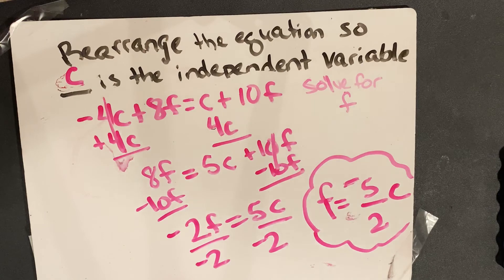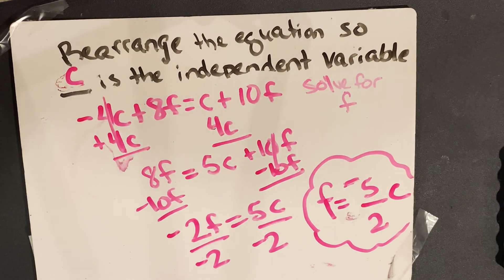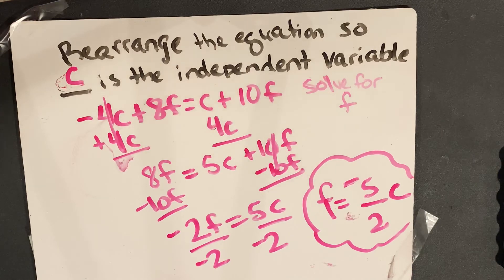If you want to rewrite it so that it makes more sense to you, then all you do is switch sides. So we had to rearrange it to get a as our independent variable. Now a is the independent variable — we know what that is. This is what you would write.